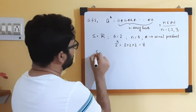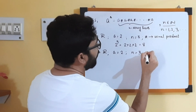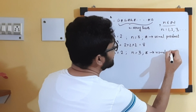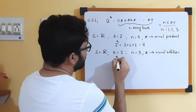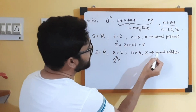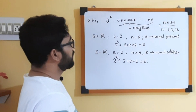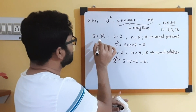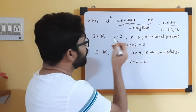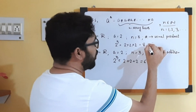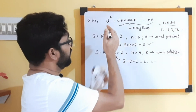Now I am changing the operation a bit. Everything remains the same — the set is the set of real numbers, my element a is 2, my n is equal to 3 — but my operation is the usual addition. Then 2 cubed, as per the definition with addition replacing multiplication, will be 2 + 2 + 2, which means 6. So if your operation is multiplication, 2 cubed equals 8; if you consider the operation to be addition, 2 cubed will be 6 as per the definition of this symbol.